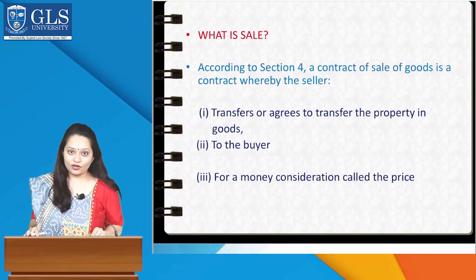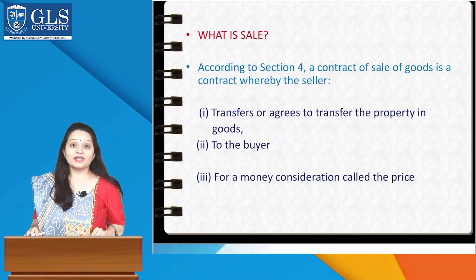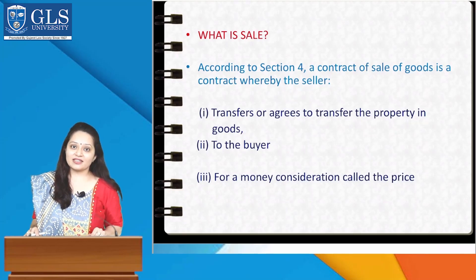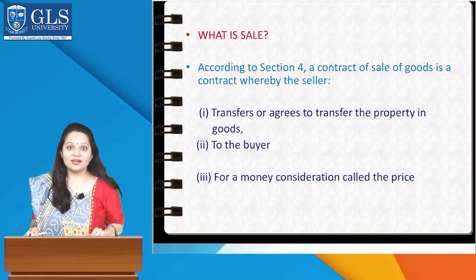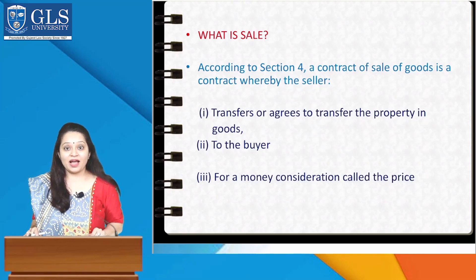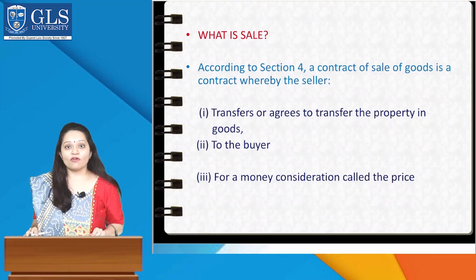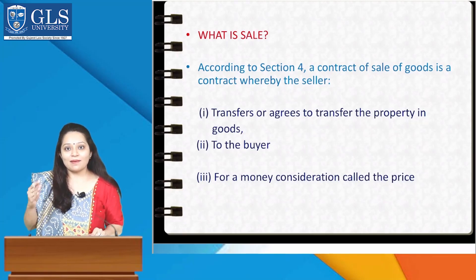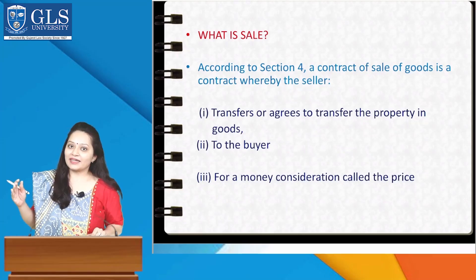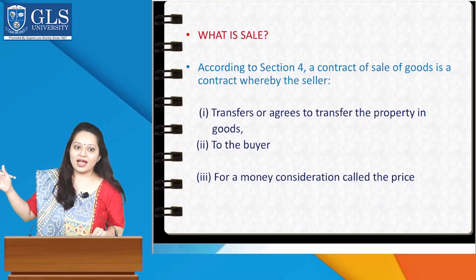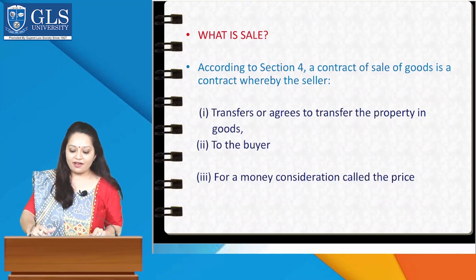Sale is a contract. But if sale is a contract, why are we not studying it under the Indian Contract Act 1872? Earlier, sale was covered in the Indian Contract Act 1872 only. However, with the increased volume of sales transactions and its complexities, there was a need to have a separate act — the Sale of Goods Act 1930. Coming to the definition of Sale.